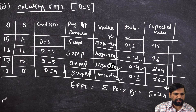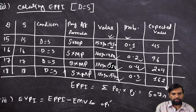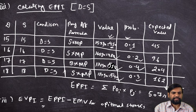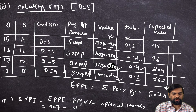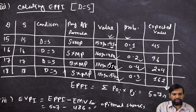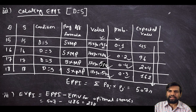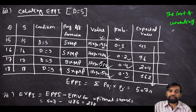Now we compute EVPI — expected value of perfect information — which equals EPPI minus EMV for optimal stock. That is 507 minus 486 = 21. Therefore the cost of uncertainty, which is EVPI, equals Rs. 21. This is the final decision for this example.